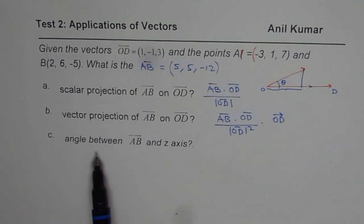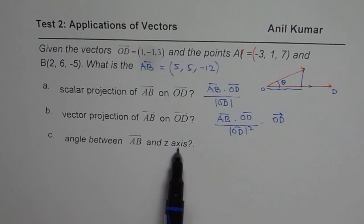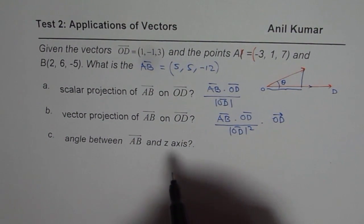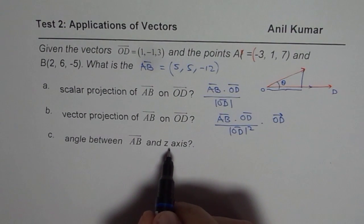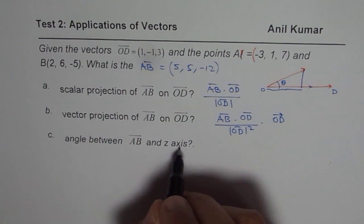Now we need to find the angle between AB and Z axis. Now for the Z axis, you can consider a unit vector along the Z axis or any vector along the Z axis.